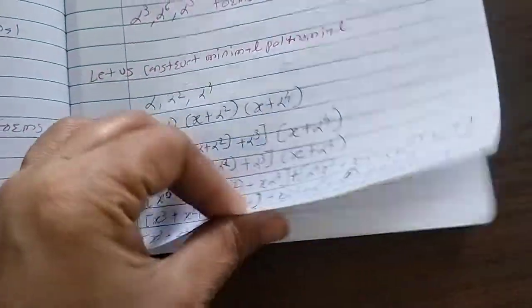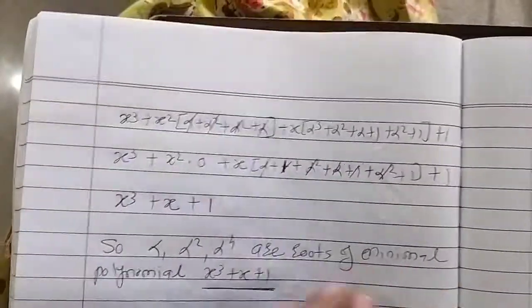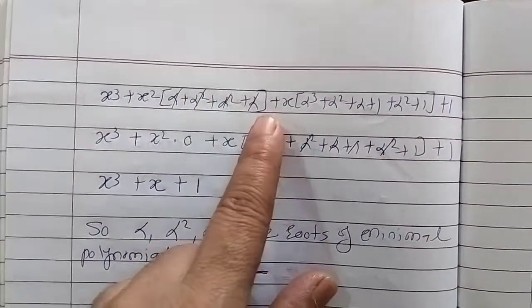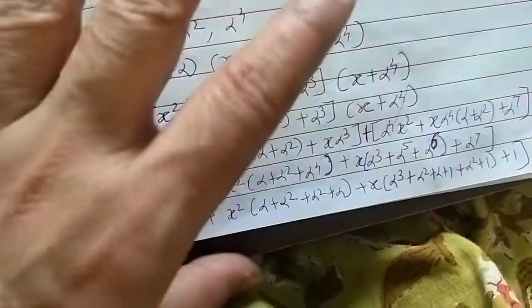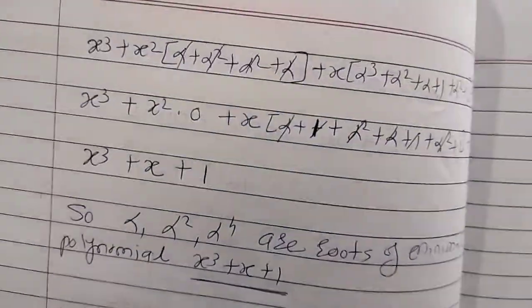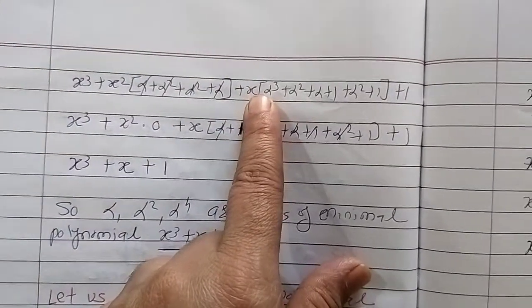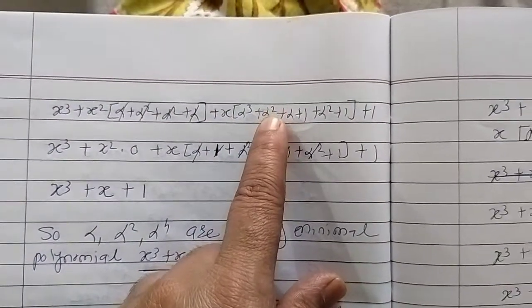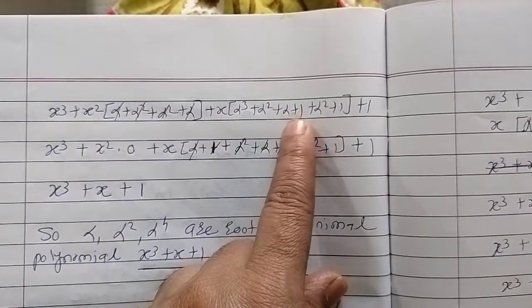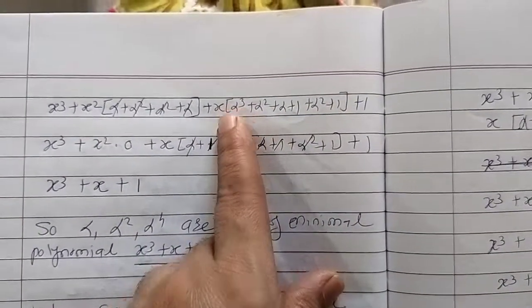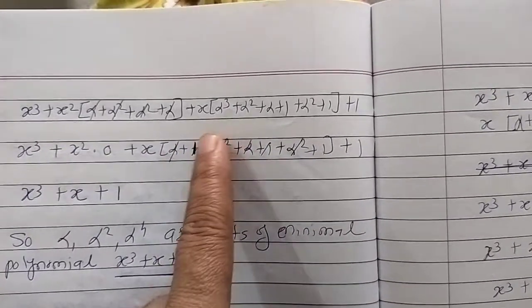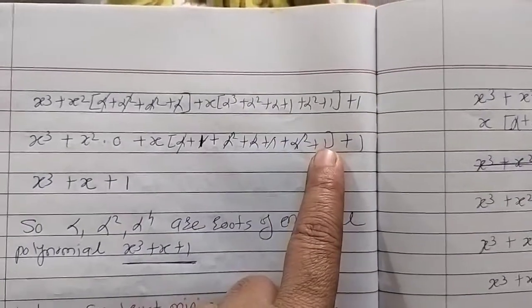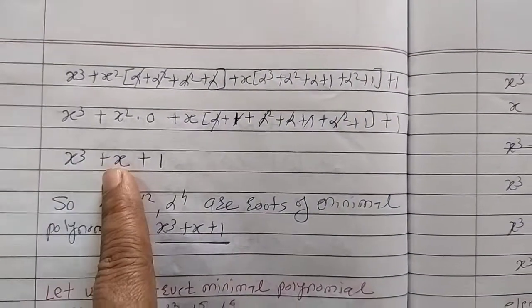After substitution and XOR cancellations: in the x² coefficient, α + α² + (α²+α) — all terms cancel giving 0. In the x coefficient, α³ + α⁵ + α⁶ = (α+1) + (α²+α+1) + (α²+1) — all terms cancel giving 0. The constant term α⁷ = 1. So the minimal polynomial is x³ + x + 1.